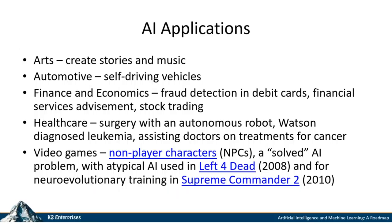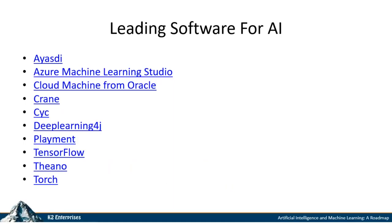There are many AI applications. Much of the soundtrack music in French television is machine-composed. We have self-driving vehicles, fraud detection in credit and debit cards, and financial services. In healthcare, there's autonomous surgery with robots, and IBM Watson doing leukemia diagnosis — because a machine with perfect recall of all the research in the world of cancer has an advantage over a human in pulling data quickly. We're also seeing AI assist doctors with cancer treatments. In video games, non-player characters have used neuroevolutionary training as far back as 2008 in Left 4 Dead.